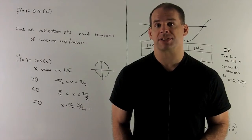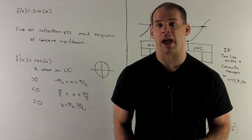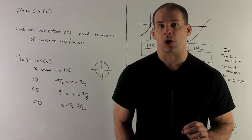Let f of x be equal to sine of x. Find the inflection points and the regions of concave up and concave down for f. So, to answer our question,